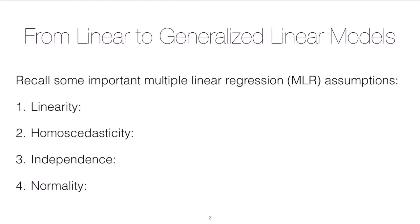The first assumption is that we have linearity, so that there is a linear relationship between the parameters, the betas, and the response variable y. And so if we ignore random error, the relationship between the response and the parameter should be linear.